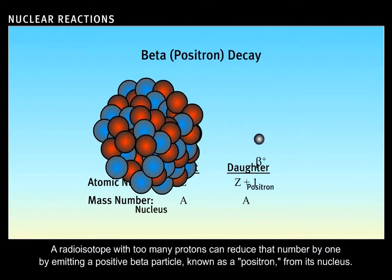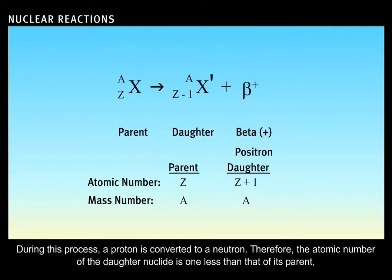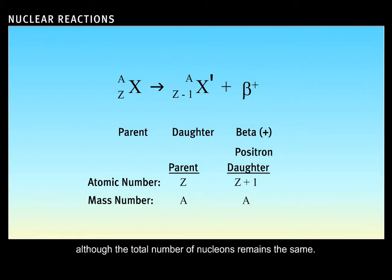A radioisotope with too many protons can reduce that number by one, by emitting a positive beta particle, known as a positron, from its nucleus. During this process, a proton is converted to a neutron. Therefore, the atomic number of the daughter nuclide is one less than that of its parent, although the total number of nucleons remains the same.